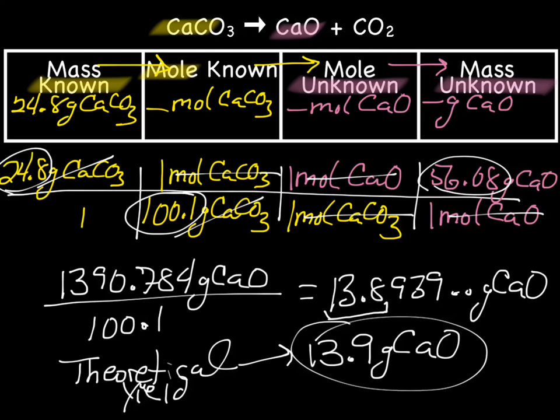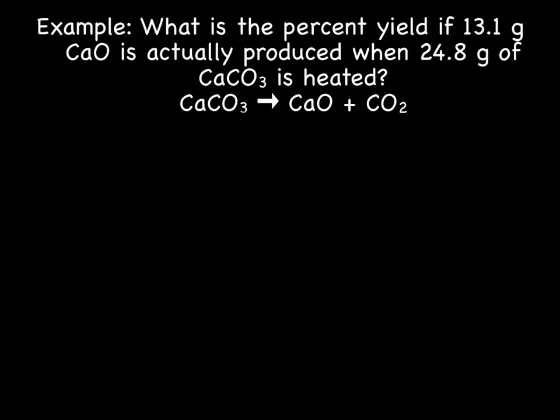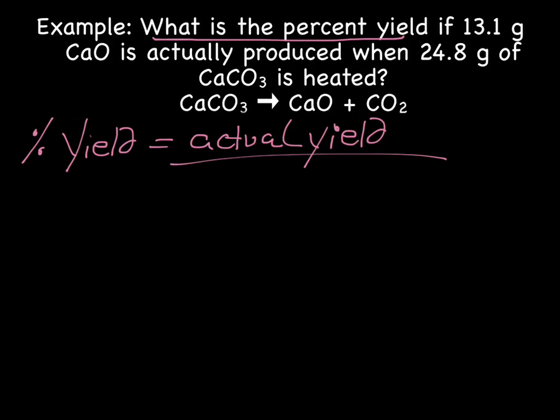So now let's go back to our original question. What they wanted us to find out is the percent yield. So percent yield, if you remember, is the actual yield. This is the one that was measured in the laboratory, divided by the theoretical yield. And then that answer is multiplied by 100%.